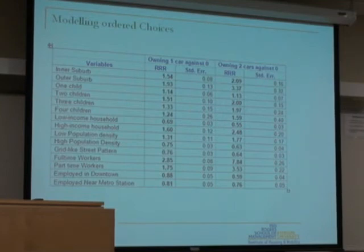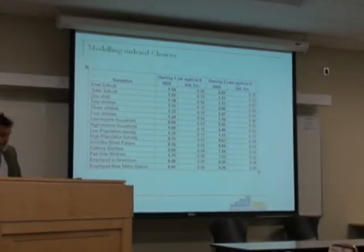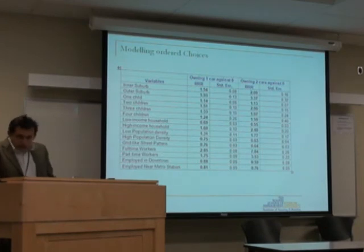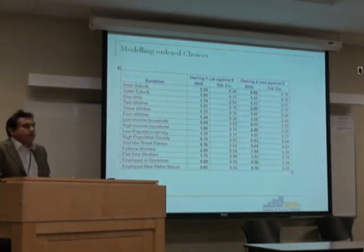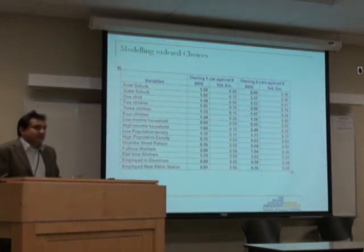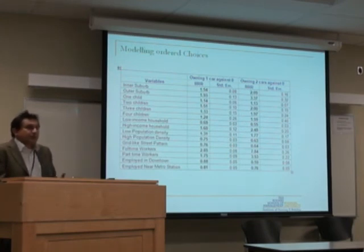There is also considerable academic literature discussing the role of street pattern. Living on a grid-like street structure may be associated with different mobility preferences than living on a different type of street pattern. We controlled for this by creating a variable called grid-like street pattern, categorizing each neighborhood's street structure as grid or otherwise, with otherwise as the reference category.